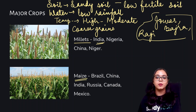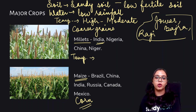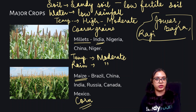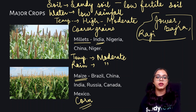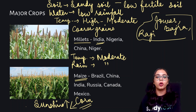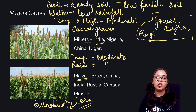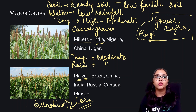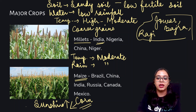When talking about maize — also commonly known as corn — the temperature it requires is moderate. The water or rainfall quantity is also moderate. One thing that maize requires in plenty is sunshine, so the amount of sunshine for the growth of corn should be high. There is no one specific type of soil referenced, but whatever soil is present should be fertile enough and well-drained, so there is no stagnation of water. The leading producers of maize are Brazil, China, India, Russia, Canada, and Mexico.